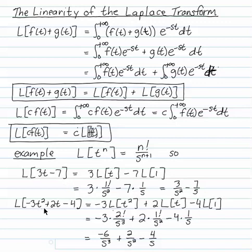And the polynomial -3t² + 2t - 4. I can write those as individual powers of t with the coefficients outside. -3 times 2 factorial over s³, positive 2 times 1 factorial over s², and -4 times 1 over s. And I just multiply. So the Laplace transform of this parabola is -6 over s³ plus 2 over s² minus 4 over s.